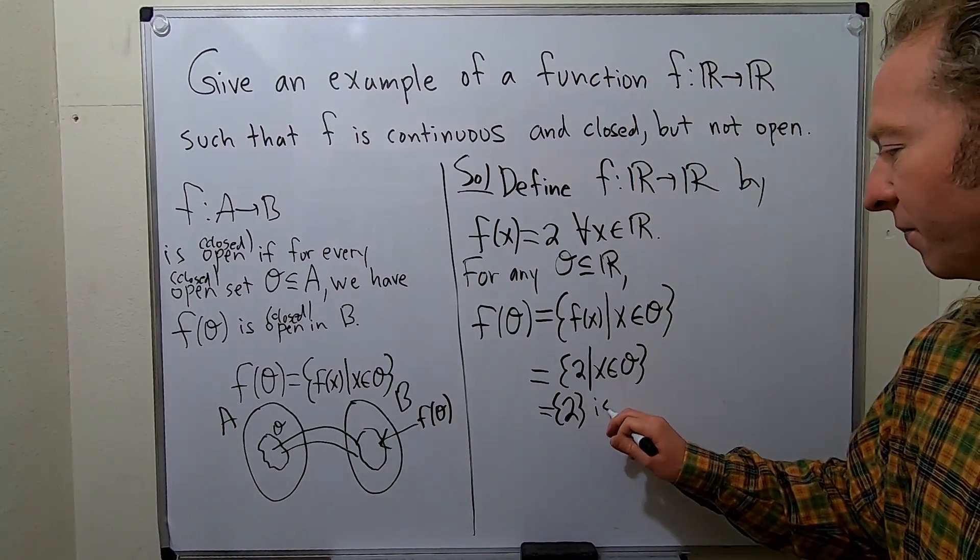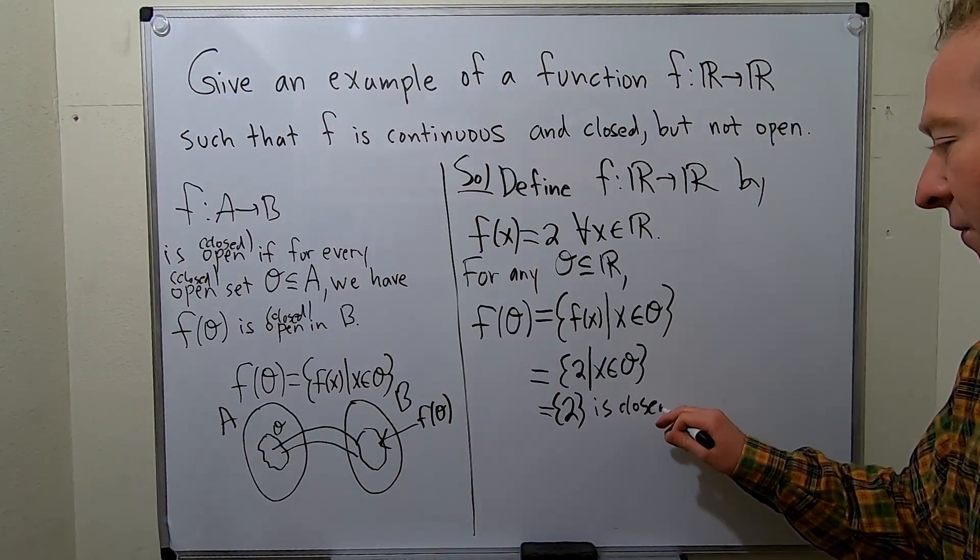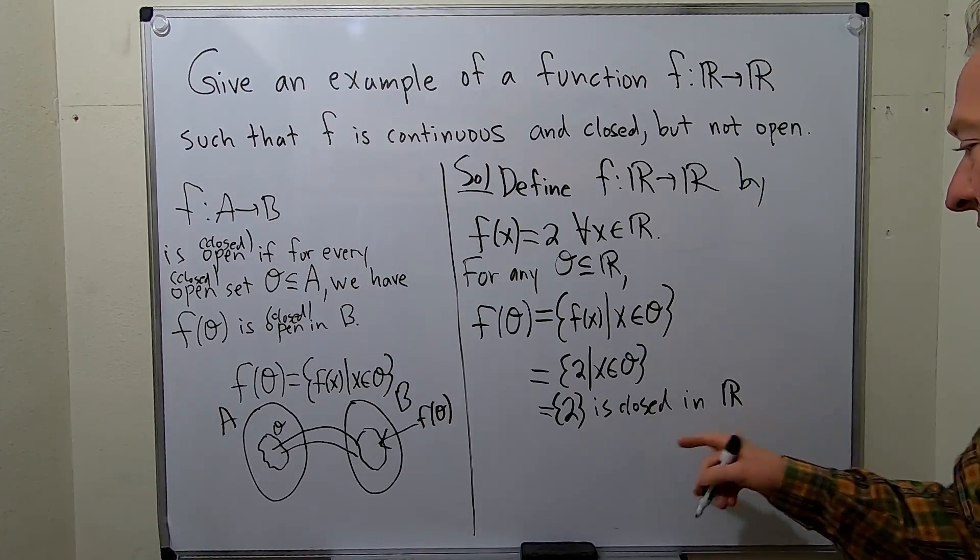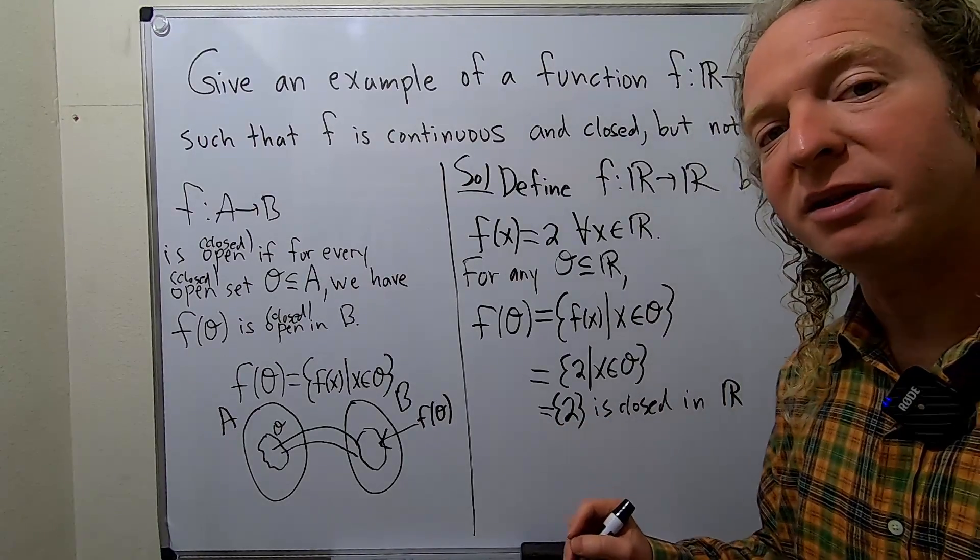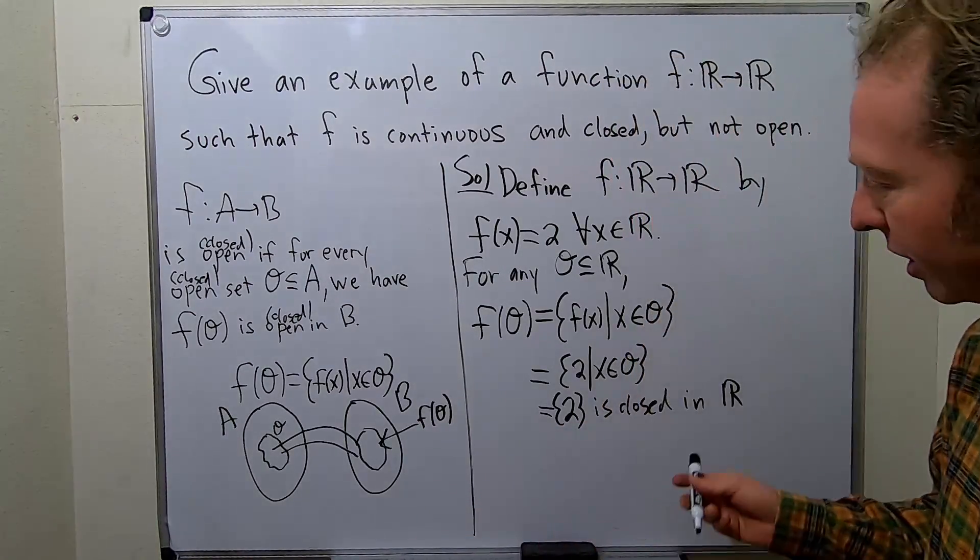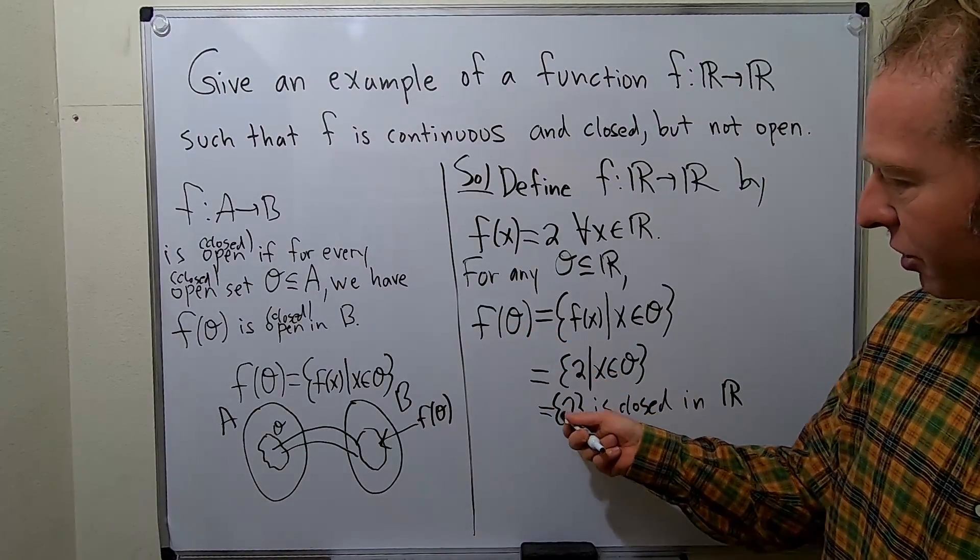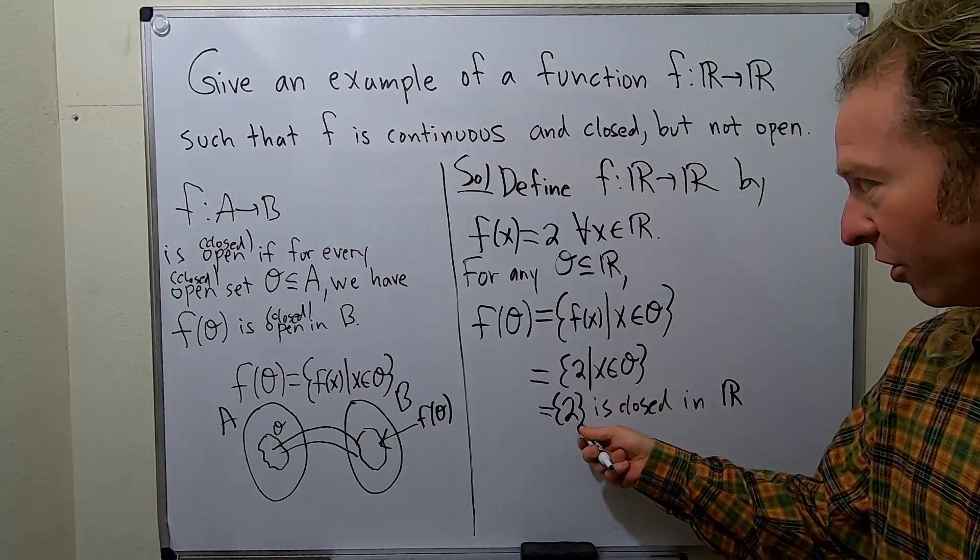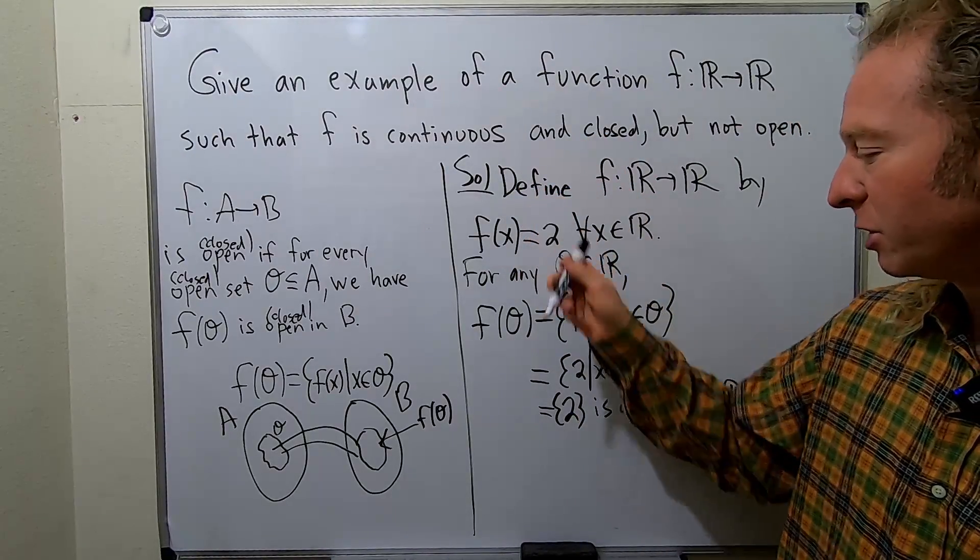So this is a singleton set. So this is closed in the co-domain. So it's closed in R because its complement is open. Its complement is a union of open intervals. So it's always closed no matter what. So in particular, if o is closed, this is closed. So this is a closed continuous map.